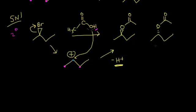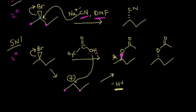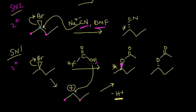Looking at the two products: the wedge product is retention of absolute configuration, and the dash product is inversion of absolute configuration. Remember, inversion is slightly preferred over retention. These two happen to be enantiomers of each other — the absolute configuration is different at that carbon. Chirality centers are important to think about: if you start with a chiral reactant and end with a chiral product, you must specify stereochemistry. Stereochemistry makes these problems even harder. For secondary alkyl halides, SN2 gives inversion only, while SN1 gives both inversion and retention products.